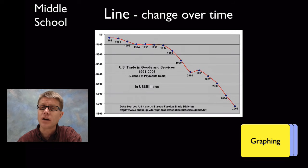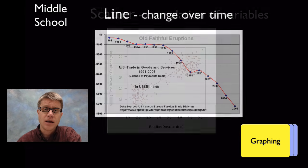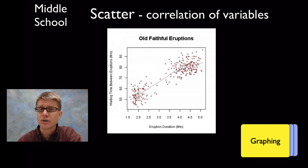The four major types of graphs I teach are the line graph. We're looking at change over time and you're going to connect the data points. We would use a scatter plot if we're looking at correlation of variables. So eruption duration and waiting time at Old Faithful, this would be a scatter plot. We're not going to connect the dots because we're just correlating those two variables.